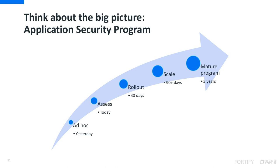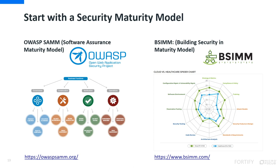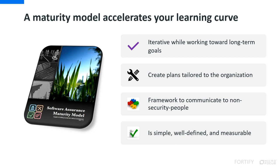We've briefly touched on the components of an AppSec program. We've said that a mature program can take years to build, so we're going to focus on a few concrete things we can do today. The first is the maturity model — become familiar with a security maturity model. The OWASP SAMM, or Software Assurance Maturity Model, was defined with flexibility in mind such that it can be utilized by small, medium, or large organizations using any style of development. BSIMM, the Building Security in Maturity Model, is another good maturity model to reference. A maturity model accelerates your learning curve — you can iterate while working toward long-term goals, create plans tailored to your own organization, and it provides a framework to communicate to non-security people. It's simple, well-defined, and measurable.